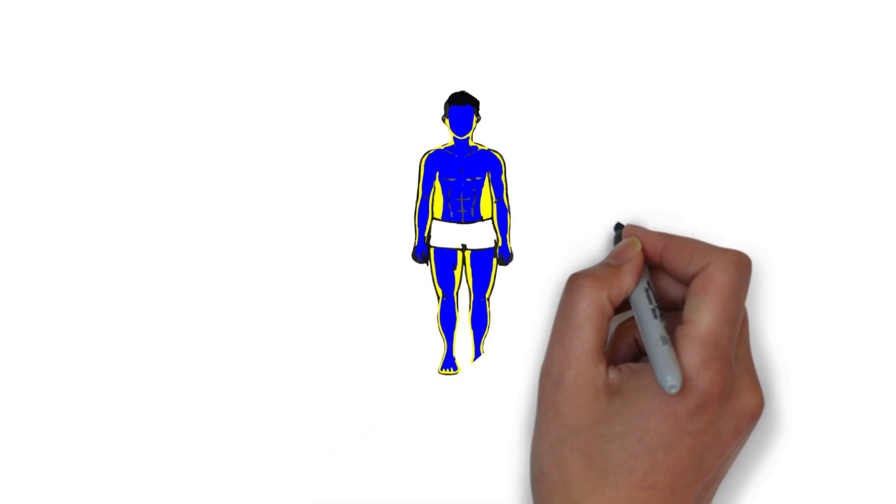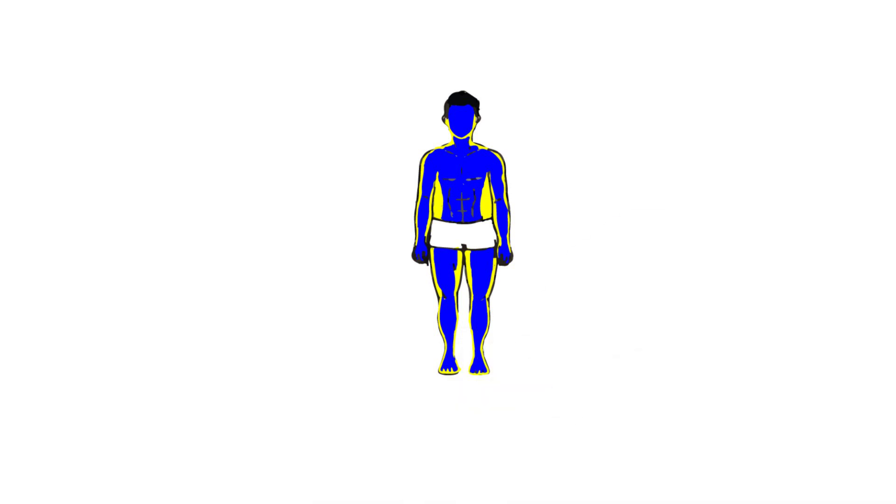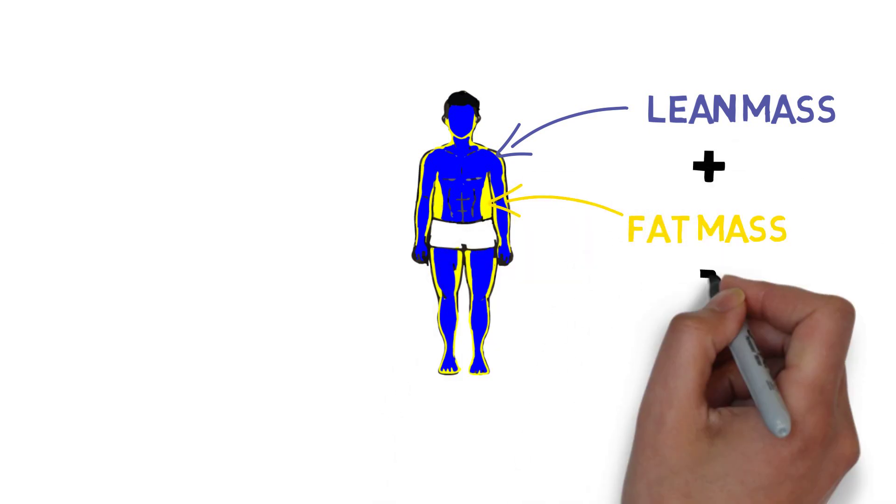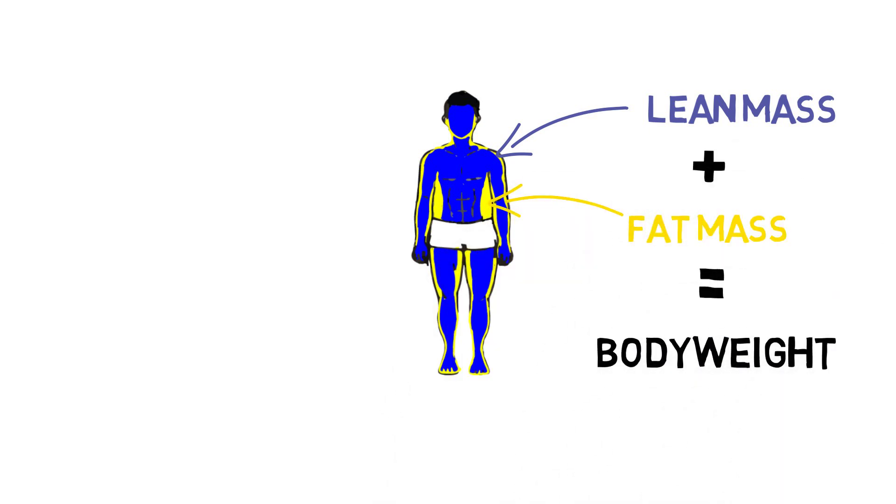Think of your body in terms of two types of mass, lean and fat. Everyone has a lean mass and then fat over it. The total of these two make up your overall weight. The amount of fat mass relative to your lean mass is your body fat percentage.